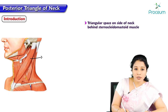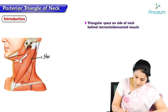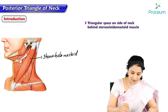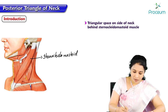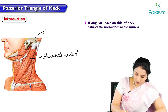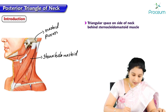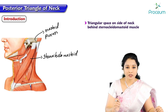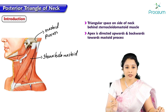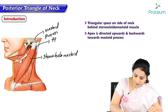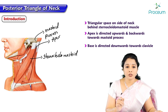This is the sternocleidomastoid muscle, running obliquely from the sternum and clavicle towards the mastoid process. This triangle is anteriorly bounded by the sternocleidomastoid, and its apex is directed upwards and backwards towards the mastoid process. The base is downwards towards the clavicle.